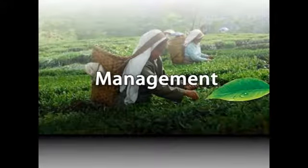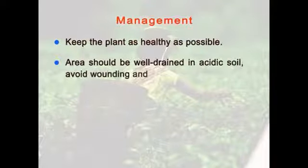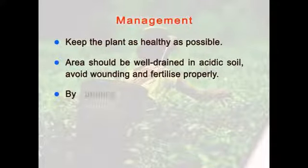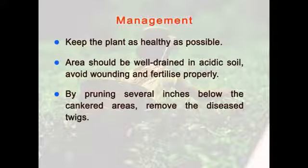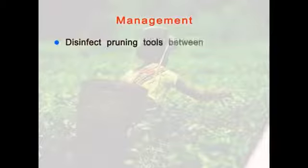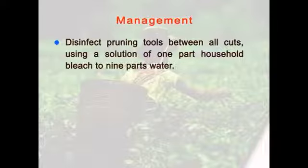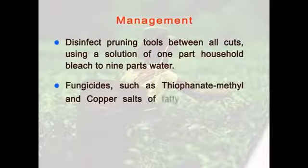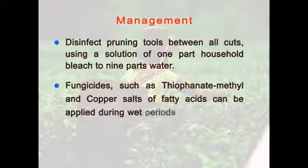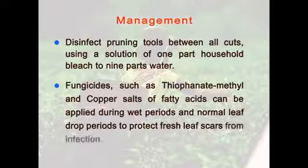Now let's see how to manage the disease. Keep the plant as healthy as possible. Areas should be well drained in acidic soil. Avoid wounding and fertilize properly. By pruning several inches below the cankered areas, remove the diseased twigs. Disinfect pruning tools between all cuts using a solution of one part household bleach to nine parts water. Fungicides such as thiophanate methyl and copper salts of fatty acids can be applied during wet periods and normal leaf drop periods to protect fresh leaf scars from infection.